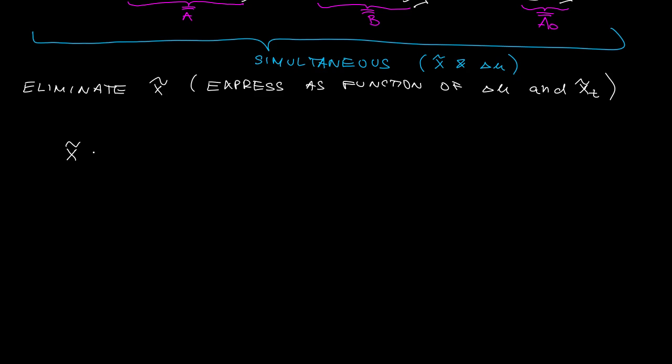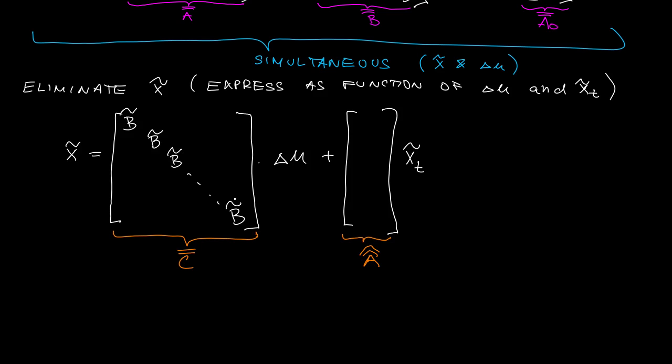Alright, so now let's go for it. Again, the relationship that we will use to eliminate the x tilde is pretty much identical in structure to the relation that you have seen in the previous videos. It's only that now I will have double bar matrices C double bar and A double hat. The matrices that relate x double bar, x tilde and the increment in u and the augmented state at the beginning of the horizon.